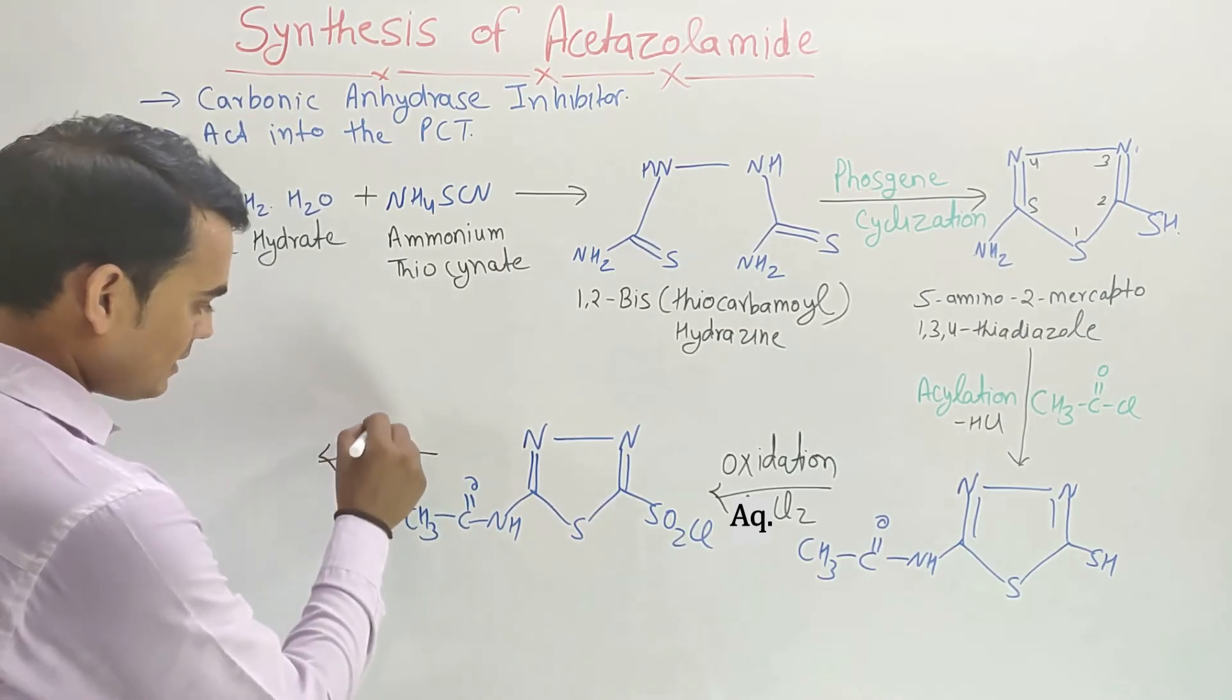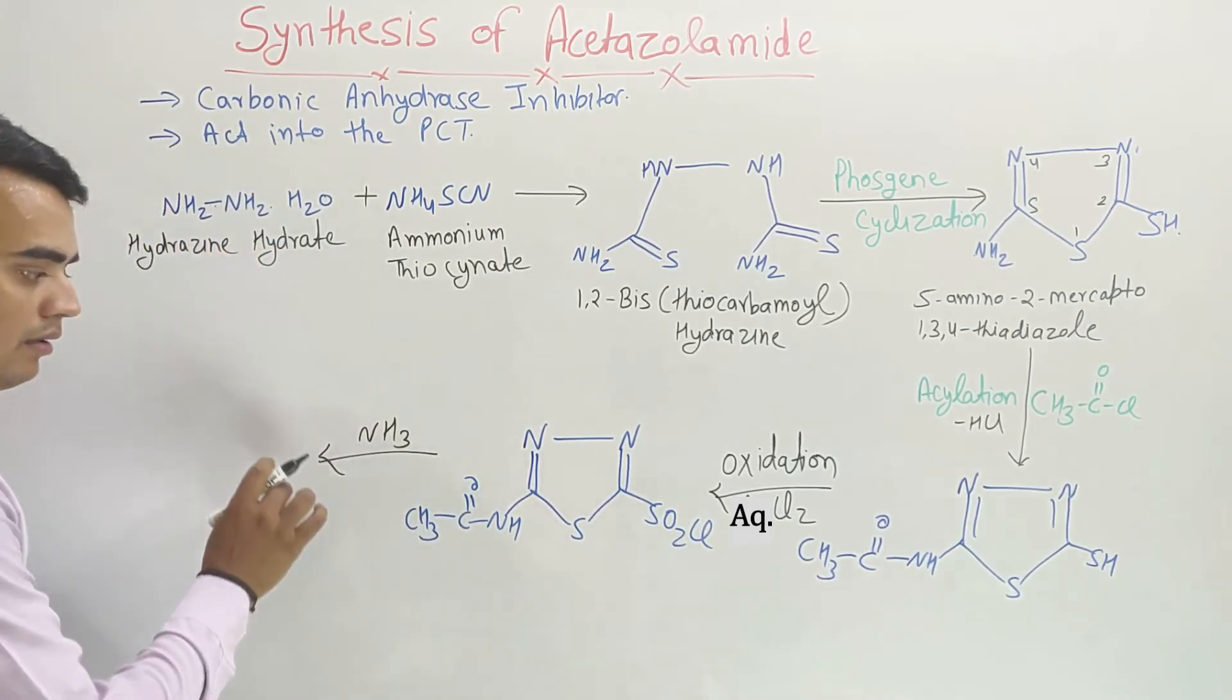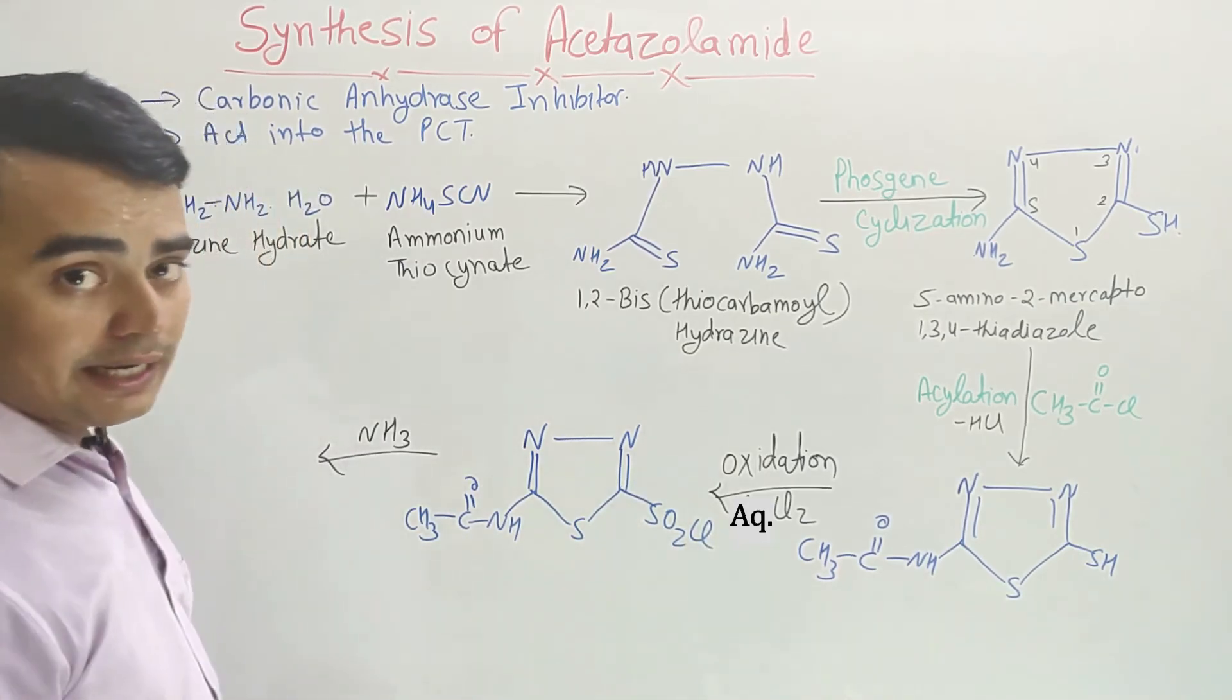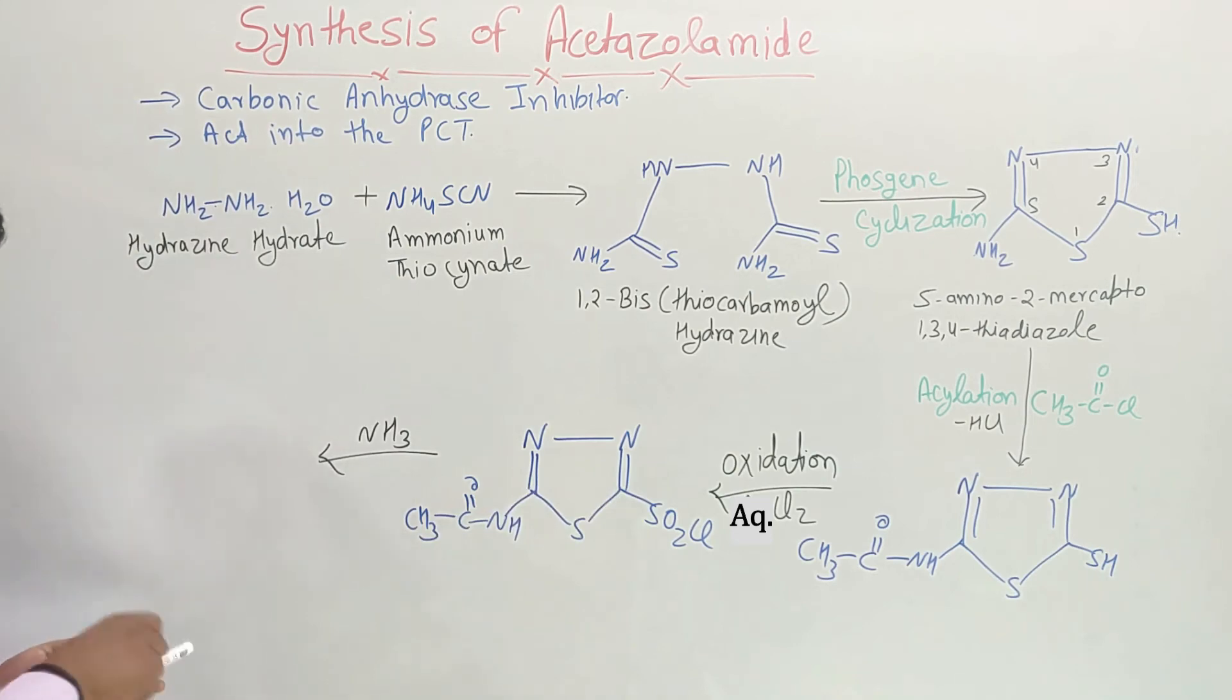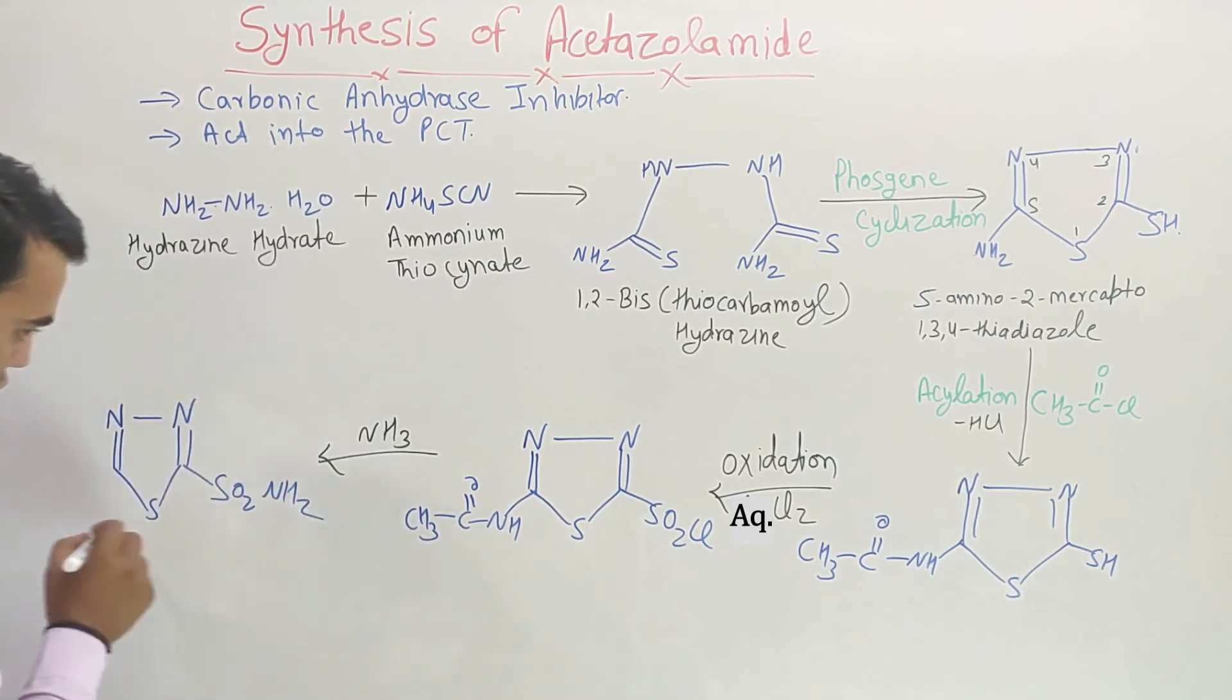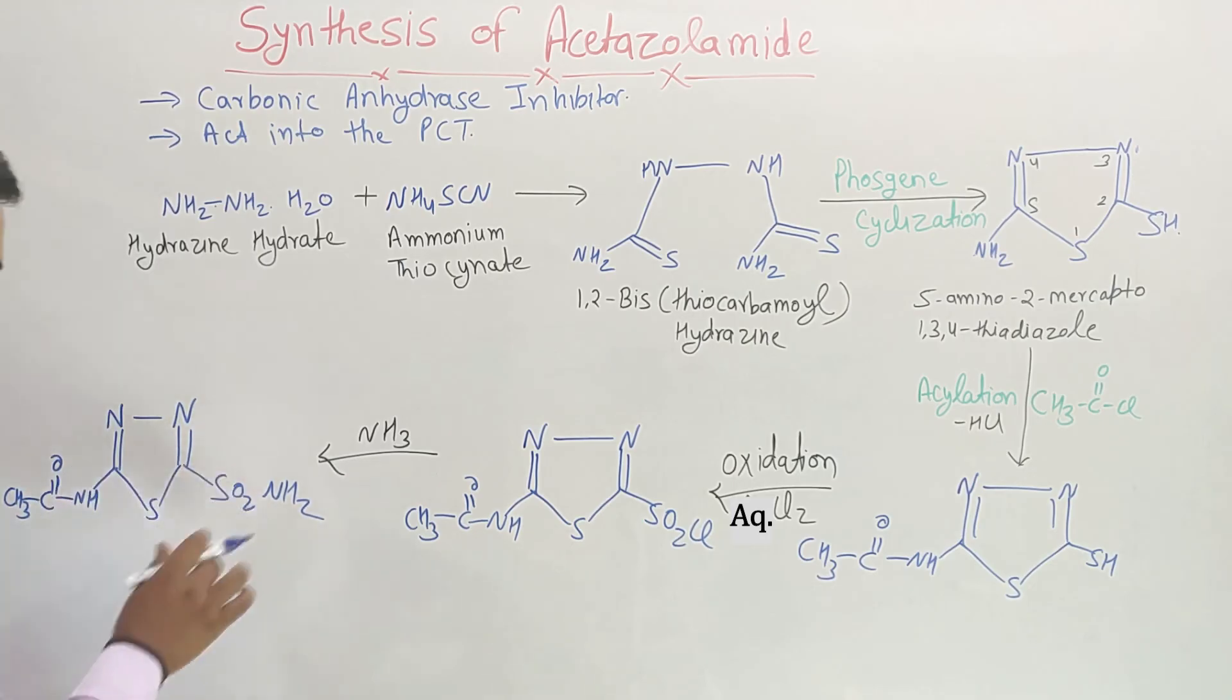On this intermediate, when ammonia gas is passed, when the ammonia gas is passed, then it will remove this chloride ion and the amino group will be added here. So finally it becomes nitrogen, nitrogen, nitrogen, sulfur, here it becomes SO2NH2, here it's NH-CO-CH3. This is the acetazolamide.